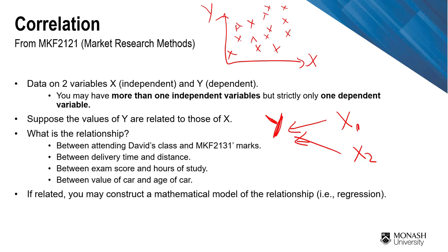Dependent variables are values that are affected by independent variables, and independent variables are natural phenomena that will influence your dependent. For example, what is the relationship between attending David's class and your MKF2131 mark? The second one: delivery time and distance. And then exam scores and hours of study. And value of car and age of car. Give you a minute to sort of go through this and pick which is which.